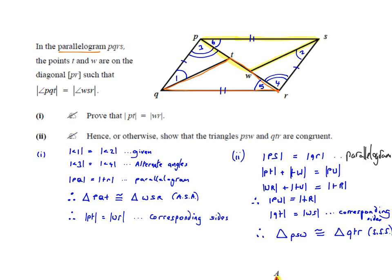We've proven that three sides are equal using the side-side-side method. Therefore, triangle PSW is congruent with triangle QTR.